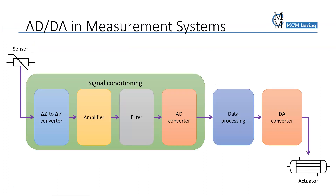Where do we find AD and DA converters in measurement systems? If we have a sensor, the data from the sensor is usually a change in resistance, capacitance, or inductance. We have to change that impedance to a voltage, which we do via, for example, a Wheatstone bridge, and then we go to the amplifier to make the signal stronger.